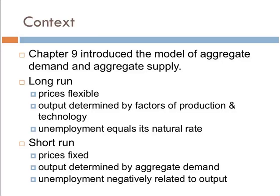In the short run, prices are sticky or fixed, and therefore aggregate demand shocks essentially determine output levels. So in the short run, we can sometimes overproduce and oftentimes underproduce — sometimes we'll have unemployment, sometimes overemployment — and that's just due to these aggregate demand shocks. The way that gets adjusted out is eventually prices change as we move from the short run to the long run.